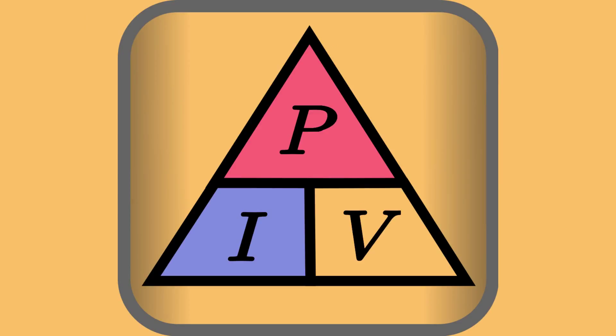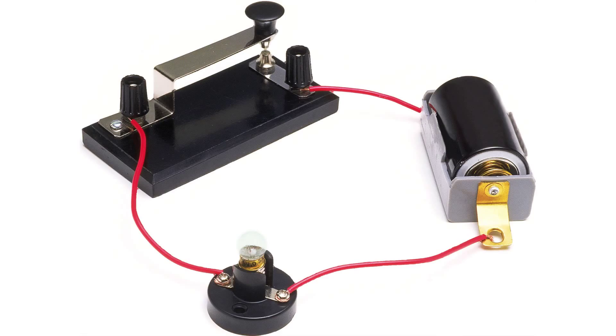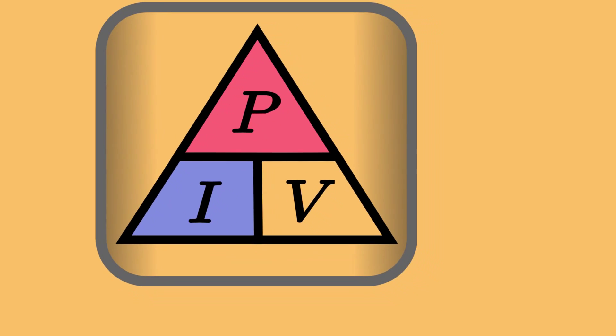There's one more formula in this arena, and that would be the power formula, which is power over current times voltage. So let's look back at our simple circuit. We still have our battery and our light bulb and our switch. But how much work does this circuit actually do? That would be our power output.